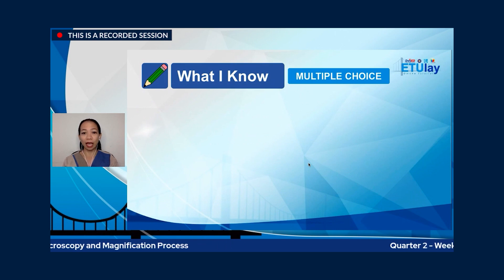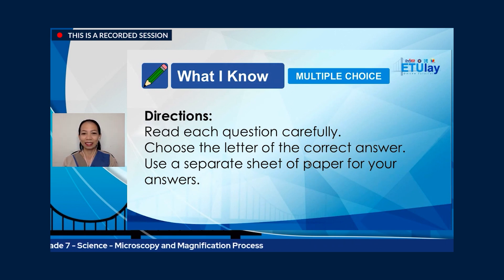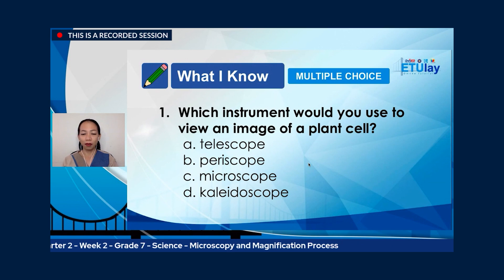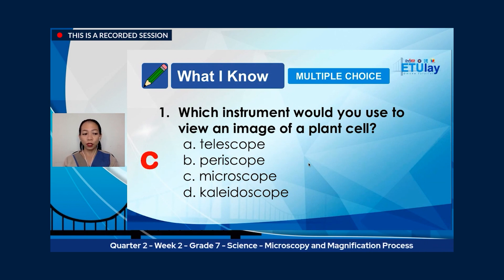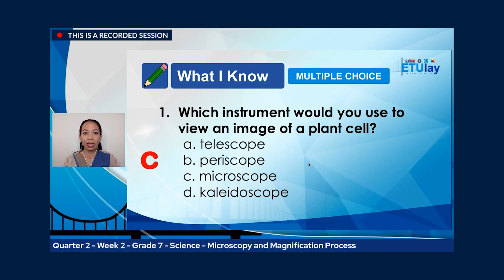This pre-test is in a multiple-choice format. Read each question carefully, choose the letter of the correct answer, and use a separate sheet of paper for your answers. Number one: which instrument would you use to view an image of a plant cell? A. Telescope. B. Periscope. C. Microscope. Or D. Kaleidoscope. The correct answer is C, microscope. A telescope lets you view distant objects. A periscope lets you observe surroundings while remaining under cover, while a kaleidoscope consists of mirrors that reflect images of bits of colored glass in different geometric designs.